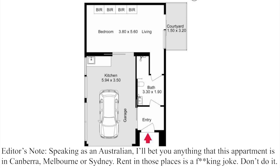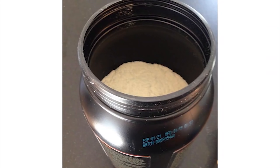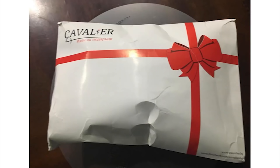This is an AU $450 per week apartment. That is a studio apartment where the kitchen and the garage are in the same area. What? Brand new protein powder — not even filled halfway.